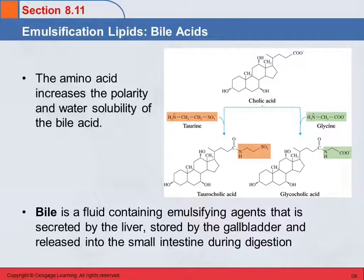Those are bile acids. Bile itself is a fluid that contains bile acids. It's secreted by your liver, stored in your gallbladder, and then released into your small intestine when you're digesting food. You've probably heard of people who have had a gallbladder attack or gallstones. Some gallstones are actually almost pure cholesterol that has precipitated out, and that causes a lot of problems. You can survive without your gallbladder — your liver is still going to make bile acids — but the problem is you just don't have that storage place for them anymore. So if you don't have a gallbladder, you have to be more careful with the fats you eat, or you're not going to digest them properly, and that leads to other problems.